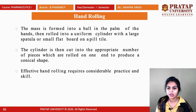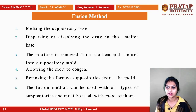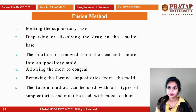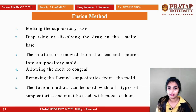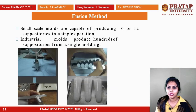The fusion method involves: first, melting the suppository bases; second, dissolving or dispersing the drug in the melted base; then the mixture is removed from heat and poured into a suppository mold, allowing the melt to congeal; and finally removing the formed suppository from the mold. The fusion method can be used with all types of suppositories and must be used with most of them.